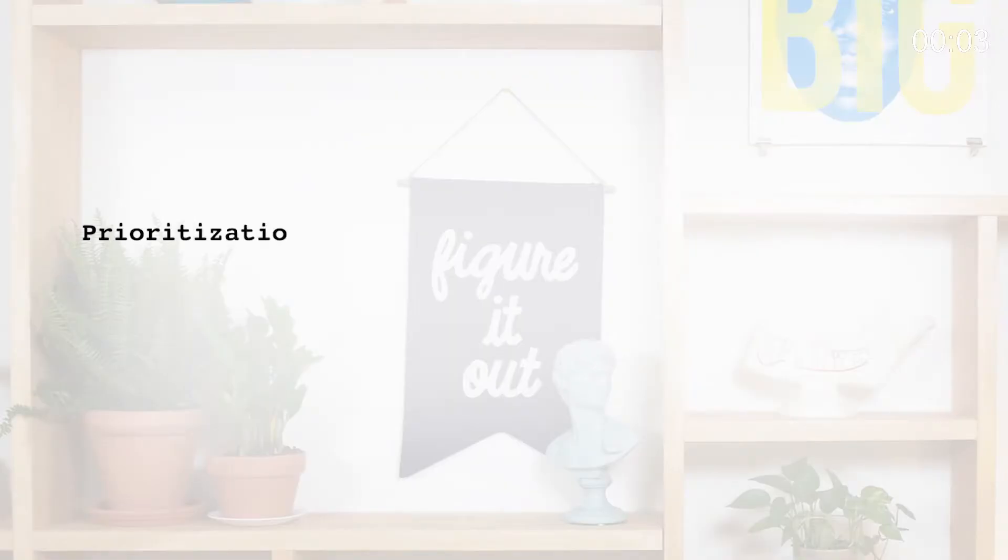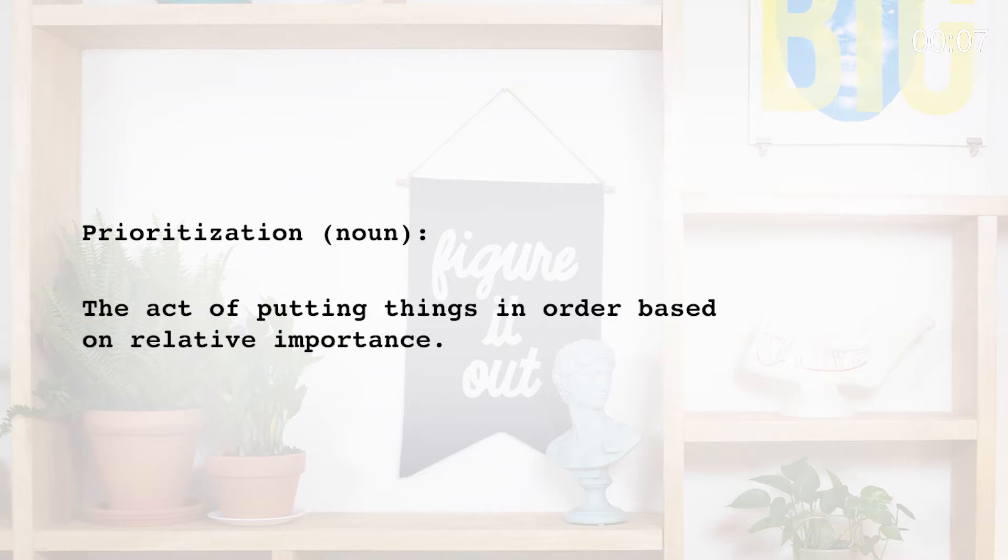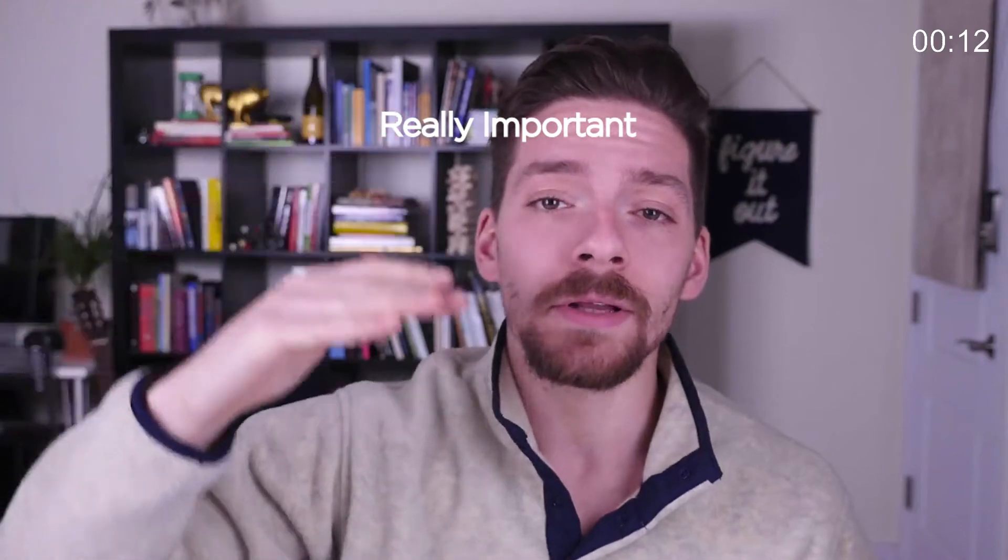So let's start off with understanding what prioritization is. Prioritization is the act of putting things in order based on relative importance. If something's really important, we'll put it first. If something's not really that important, we'll put it somewhere towards the end of the prioritization order.